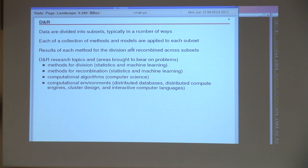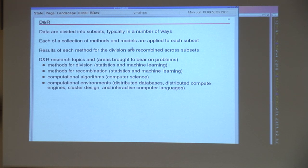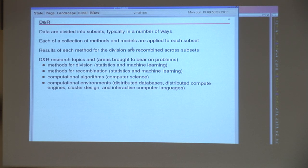In divide and recombine, we divide the data into subsets — typically in a number of ways, especially as the data set gets bigger, since you tend to have different analysis threads. Then you apply each of a collection of methods and models to each subset. Then you bring the results of each method across the subsets back together in some way — and that's recombination.